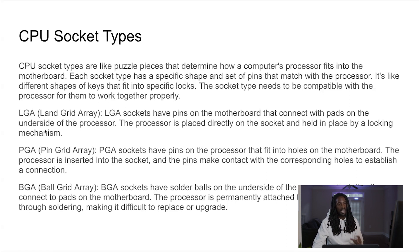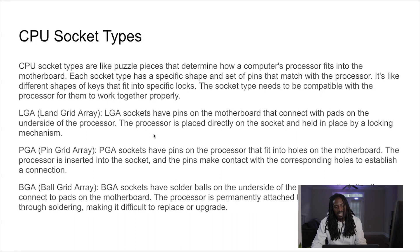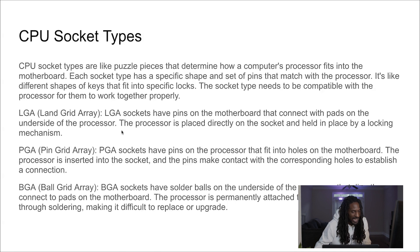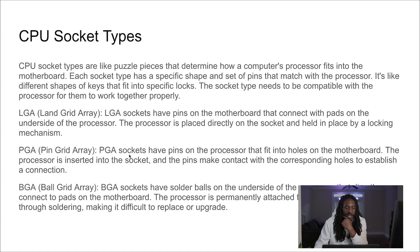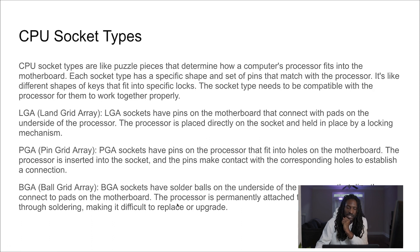There are about six or seven common socket types. LGA — land grid array — has pins on the motherboard that connect with pads on the underside of the processor. The processor is placed directly on the socket and held in place by a locking mechanism. PGA — pin grid array — sockets have pins on the processor that fit into holes on the motherboard. The processor is inserted into the socket and the pins make contact with the corresponding holes to establish connection — no latch, no locking mechanism, just straight pins. BGA — ball grid array — sockets have solder balls on the underside of the processor that directly connect to pads on the motherboard, making it difficult to replace or upgrade.